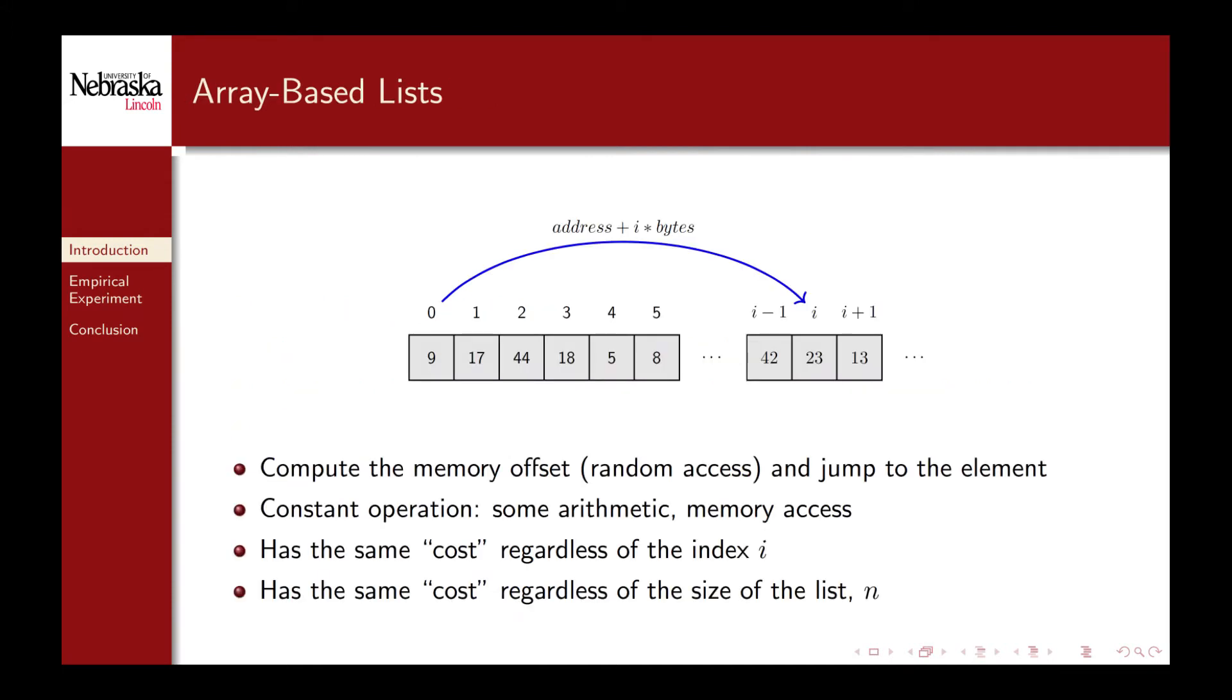With an array-based list implementation to get the i-th element we only had to compute a memory offset and then jump to that element. This was possible because using an array we could exploit the random access to efficiently retrieve the element. There's only a bit of arithmetic and a memory load and access operation to do this. The associated cost is the same regardless of the index variable i and it's also independent of the size of the list n.